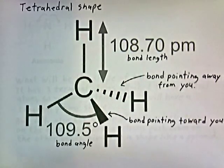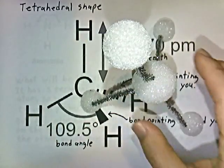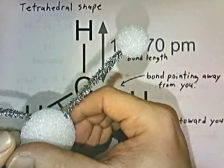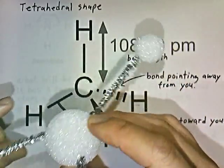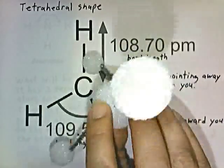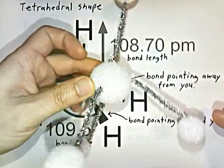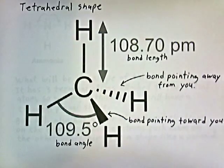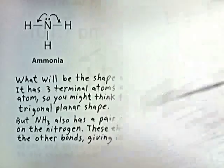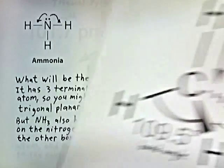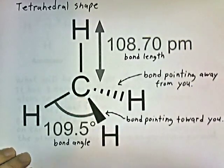Here's a model made out of styrofoam. You should see that these bonds are greater than 90 degrees. So this is a tetrahedral shape. You'll get a tetrahedral shape if you have four terminal atoms attached to the central atom. A tetrahedral central atom has four atoms attached to it.